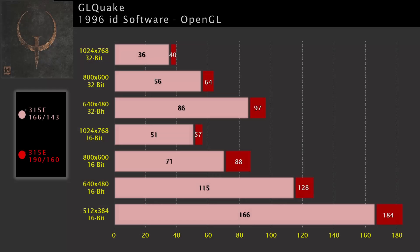Starting with GL Quake, it's an older title and I expected the 315E to perform very well. We see very high frame rates in the 512x384 and 640x480 16-bit modes. Overclocking even gets the 1024x768 16-bit mode to be almost at 60 frames per second, so a pretty good start here. One thing to note: for some reason the 512x384 in 32-bit color wouldn't work for just about any game I tested, which is why it's missing on these charts.